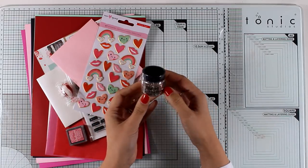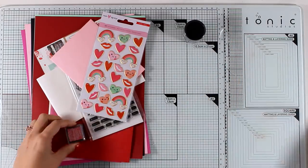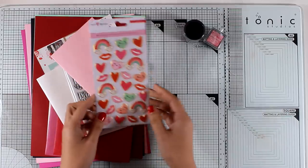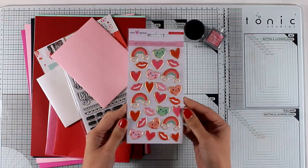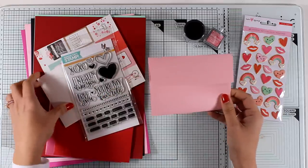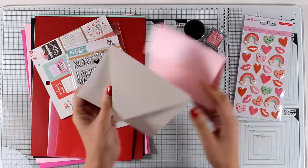This is Vintage Platinum Distress Glitter by Ranger, a gorgeous color. You also get an ink cube by Delicata that is very shiny. You also get loads of puffy stickers to embellish your cards with and there are many envelopes in the kit, here are two of them, in different designs.